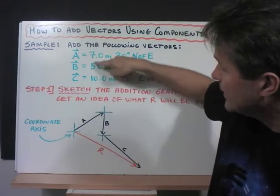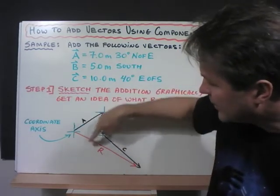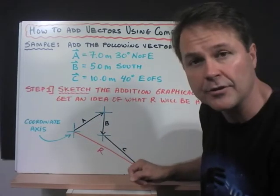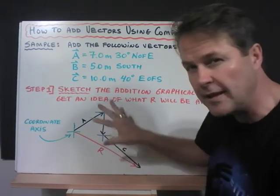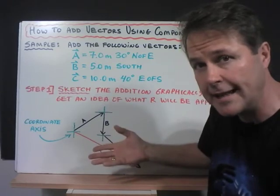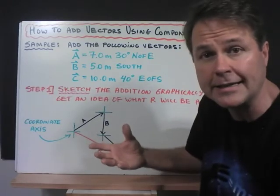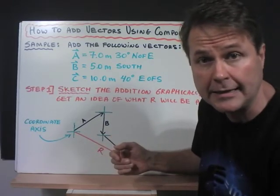It's expected to be greater than any of these numbers here. And we expect to find the answer in quadrant four. So that's the advantage of sketching it ahead of time because it will give you an idea if you did it correctly in the end.